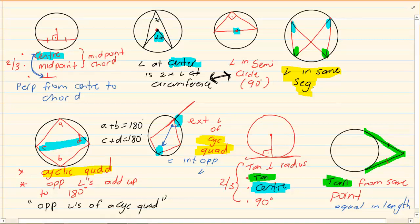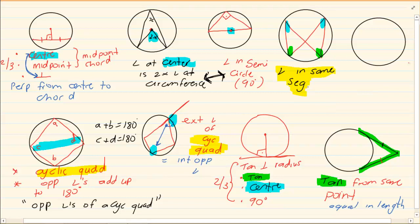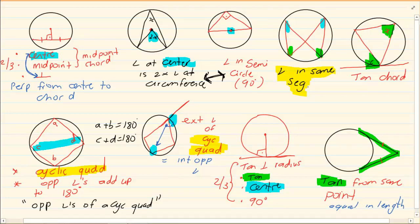The last theorem is the tan-chord theorem. An angle created from a tangent and a chord will give you an equal angle in the opposite segment. The angle the tangent and chord create equals the angle in the opposite direction created by the same chord. This theorem is also a tangent theorem.